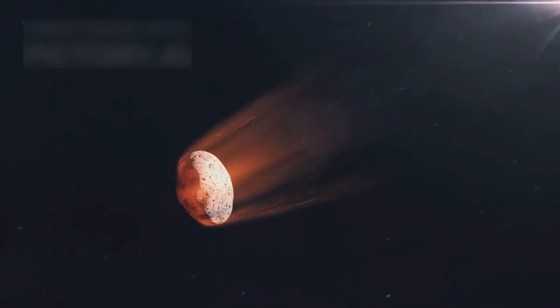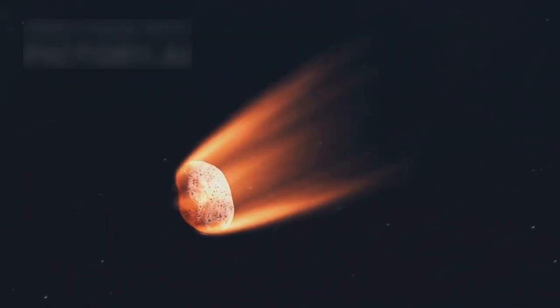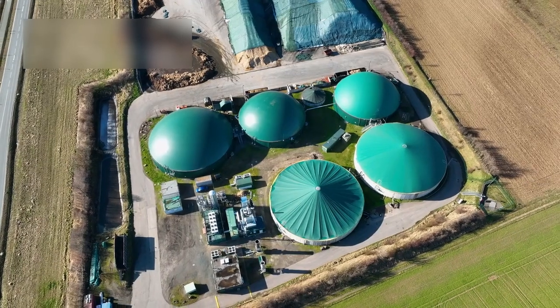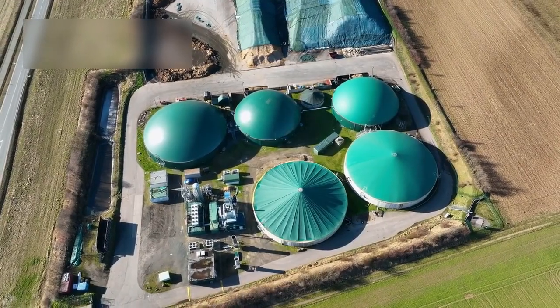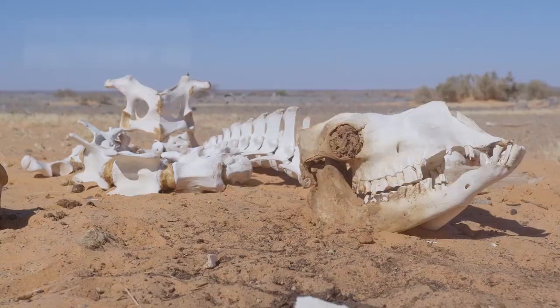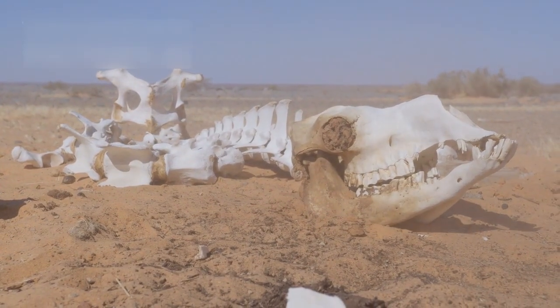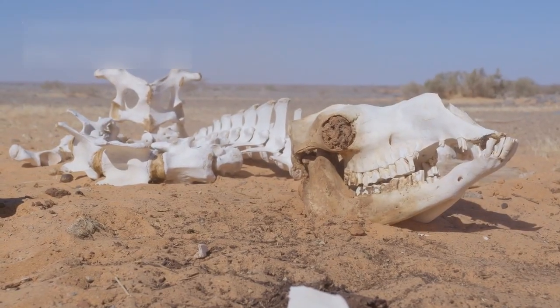Unlike typical comets, Oumuamua had no visible tail. There were also no signs of outgassing, which is a common feature of comets as they approach the sun. This lack of expected features made researchers question what the object really was.